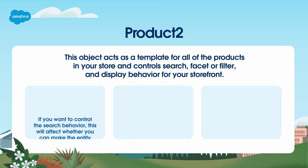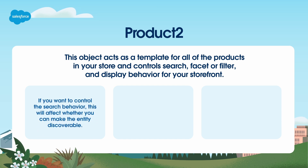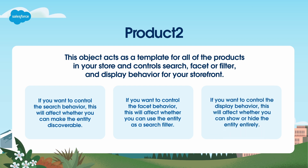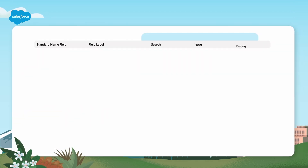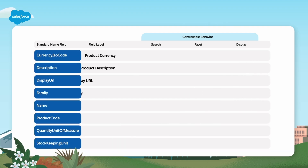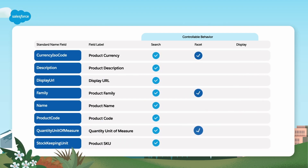The behavior you choose to control will affect how you can use each entity. For example, if you want to control the search behavior, this will affect whether you can make the entity discoverable. If you want to control the facet behavior, this will affect whether you can use the entity as a search filter. And if you want to control the display behavior, this will affect whether you can show or hide the entity entirely. The Product2 standard fields that allow you to control behavior are available out-of-the-box. Here you can see some of the standard fields that let you control search, facet, and display behavior.